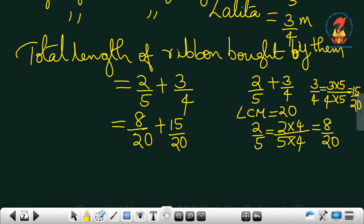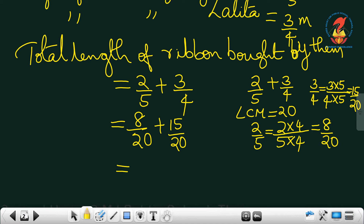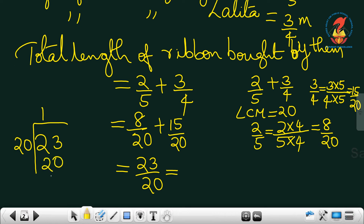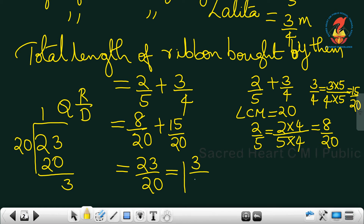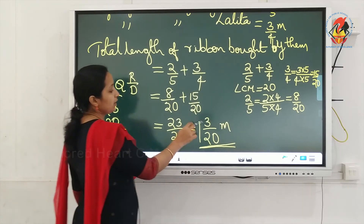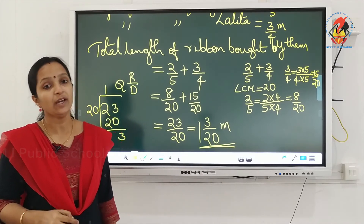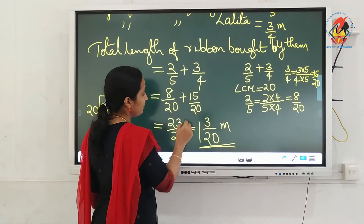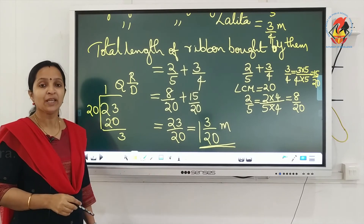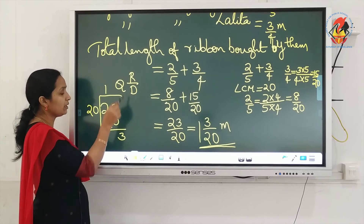8/20 + 15/20 — the denominators are the same, so we add the numerators: 8 + 15 = 23, giving us 23/20. Now it is an improper fraction, so convert it into a mixed fraction by doing division. Using the formula: quotient remainder/divisor, the answer is 1 and 3/20 meters. That is the total length of ribbon bought by them.